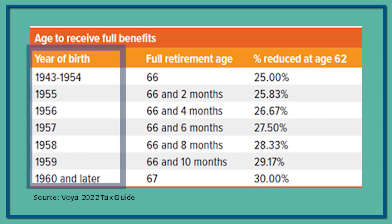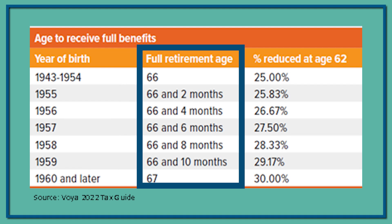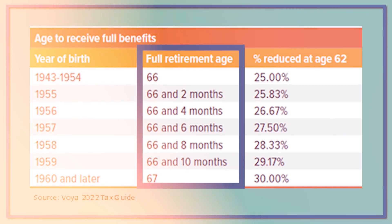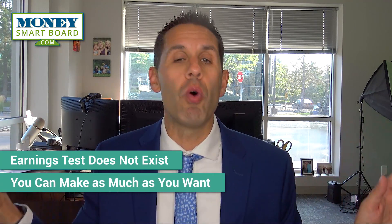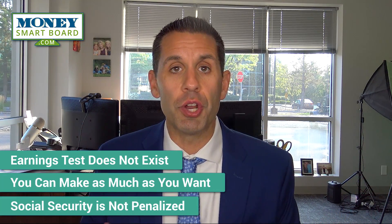Your full retirement age varies based on the year you were born. If you look at the chart, find the year you were born in the left-hand column, and the second column shows the year you're entitled to your full retirement benefit for Social Security. When we talk about this earnings test, it only applies if you take Social Security early. Once you have reached your full retirement age, this earnings test does not exist — you can make as much as you want and they don't penalize your Social Security.